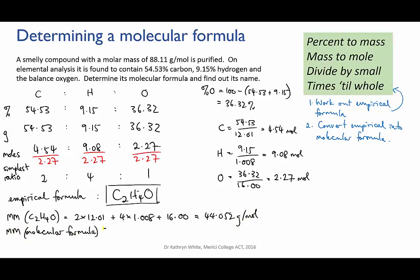And now I divide the true molar mass by the empirical molar mass, 88.11 over 44.052, and that equals 2. So that means I need to multiply the empirical formula by 2.